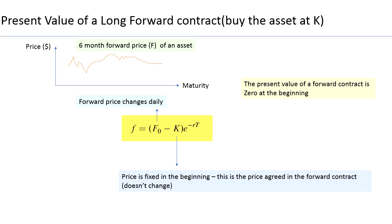In this session we are going to have a quick look at how to calculate the present value of a forward contract or a futures contract. You can use the same formula to calculate the present value of a futures contract as well. We will first look at a long forward contract — meaning we are buying the underlying in the future — and then look at how to calculate the present value of a short forward contract, meaning we are selling the asset in the future.